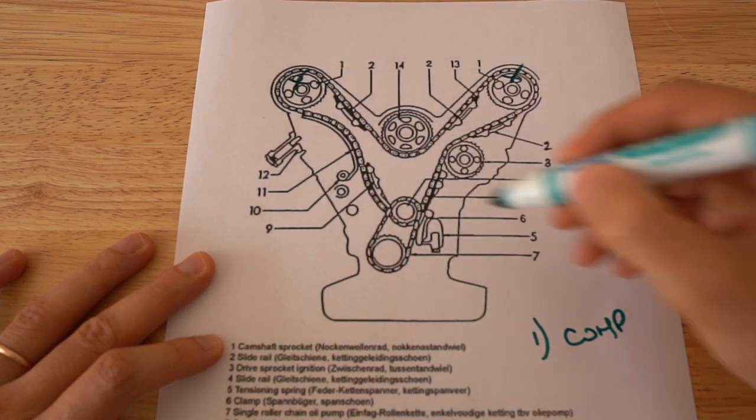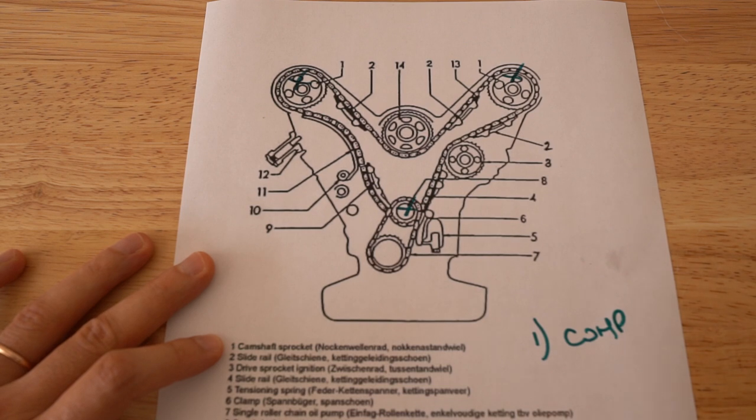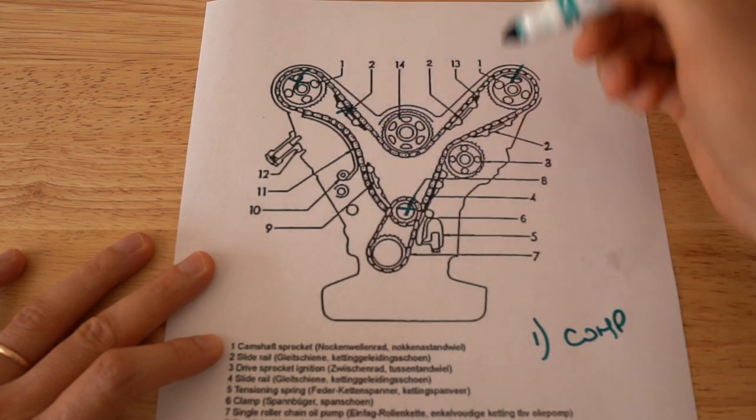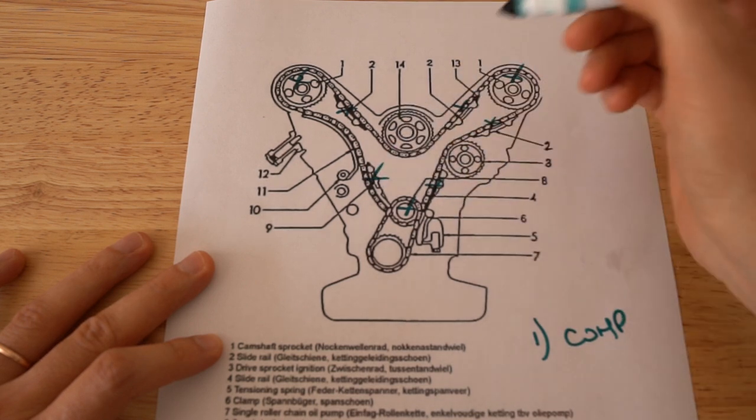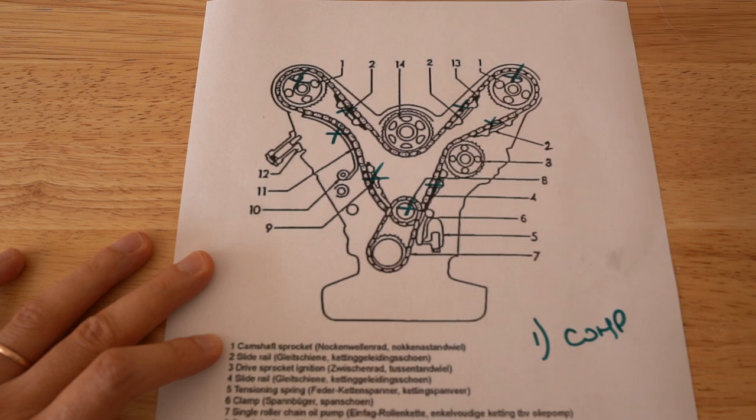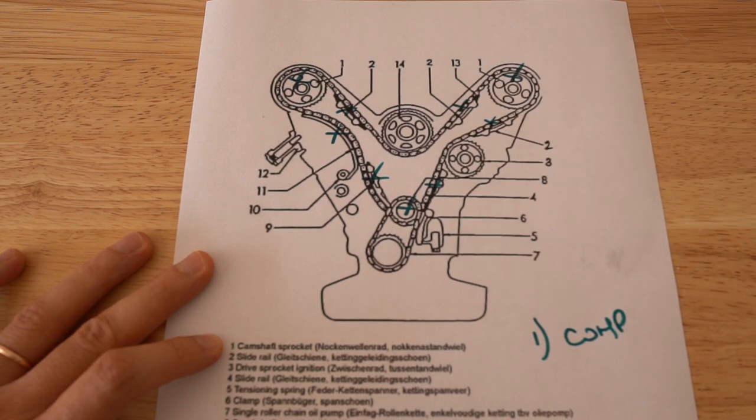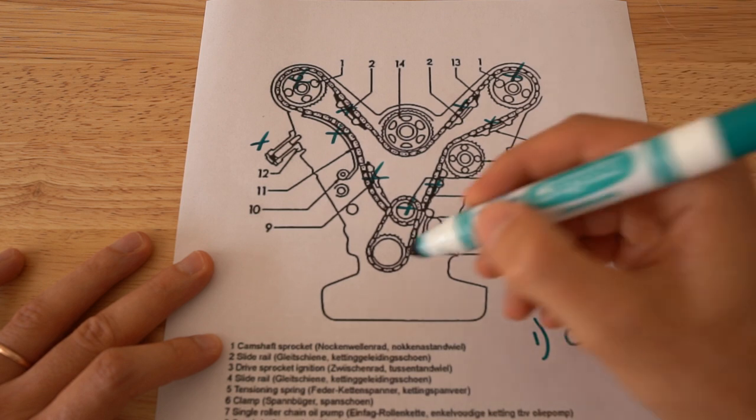The ones from the camshaft and also the one from the crankshaft. The second thing will be the plastic guides, all of them - the ones from the upper side, the ones from the lower side, and the tensioner plastic guide as well. The third thing will be the tensioner, and the last thing of course will be the chain.